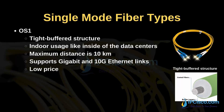OS1 is a single-mode fiber optic cable with a tight buffered structure. This type is used indoors, like in data centers. The maximum distance is 10 kilometers. It supports gigabit and 10G ethernet links. The price of these cables is low.